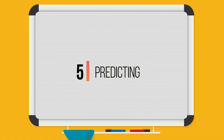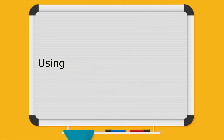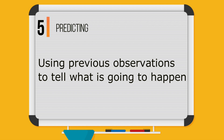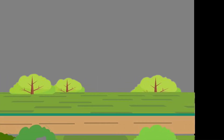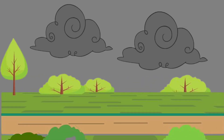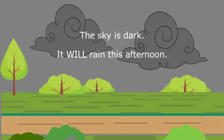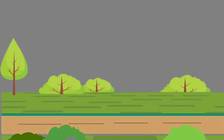Predicting: using previous observations to tell what is going to happen. Example: the sky is dark, it will rain this afternoon.